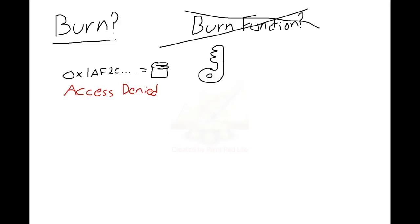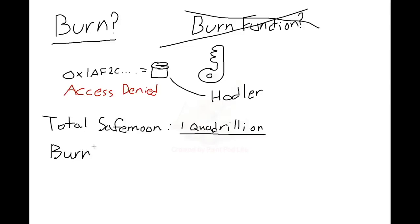But this burn wallet does count as a holder, so it also gets a share of the reflections, and this is critical. How much of a share? Right now, almost half. At the time of making this video, the burn wallet has 416 trillion tokens in it, which is 41.6% of the entire supply of one quadrillion SafeMoon.